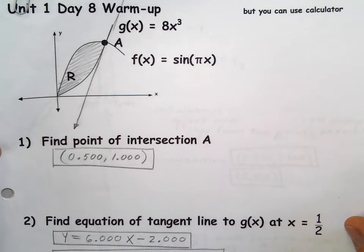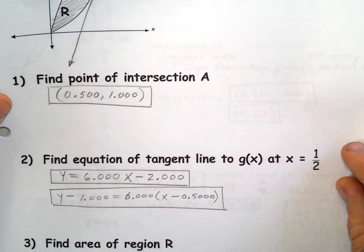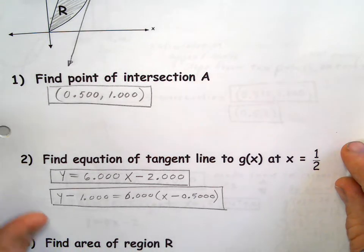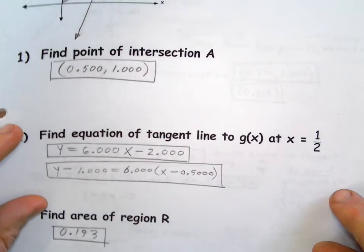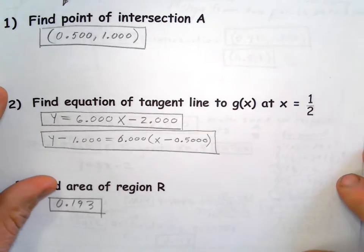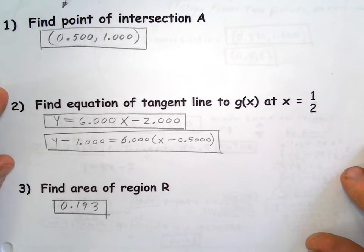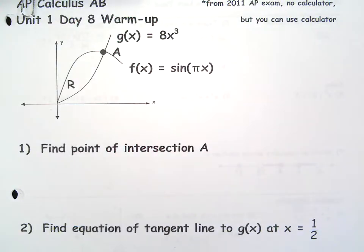Now I'm assuming you've tried these. These are the answers. Two different answers to number two. You can write the equation of the tangent line in slope intercept or point slope. We're going to often go with point slope because it's what we're going to get and AP is fine with it for free response questions. So we're going to go ahead and go over these problems.